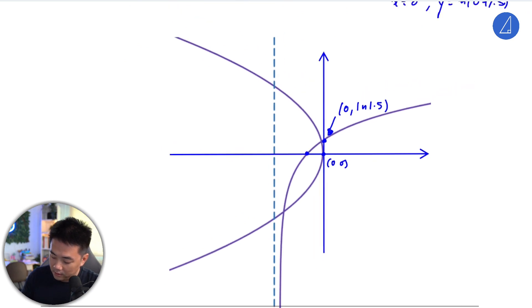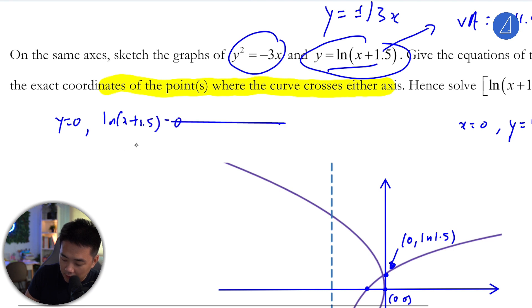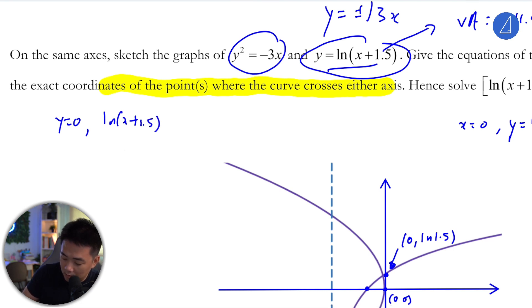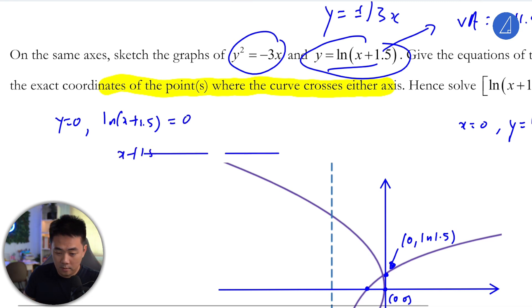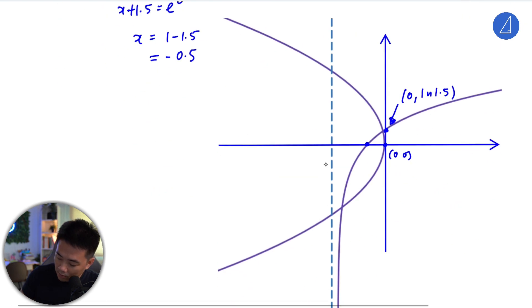We also need the x-intercept. When y is 0, ln(x + 1.5) equals 0, so x + 1.5 equals e to the 0, which is 1. Therefore x equals negative 0.5. So this point is (negative 0.5, 0).